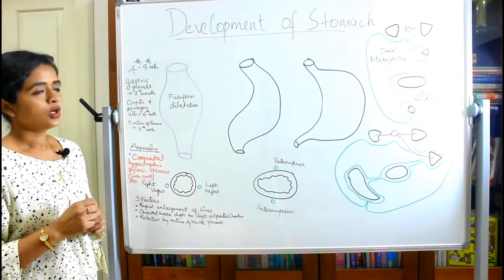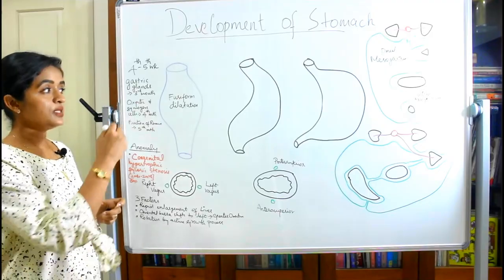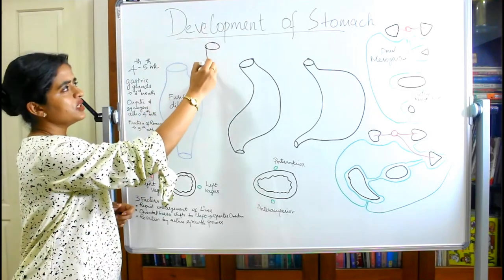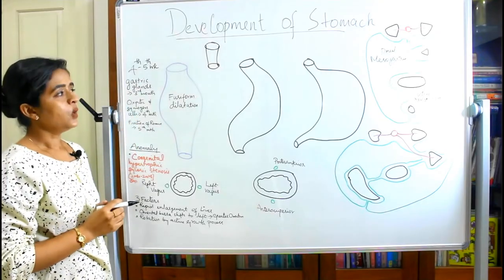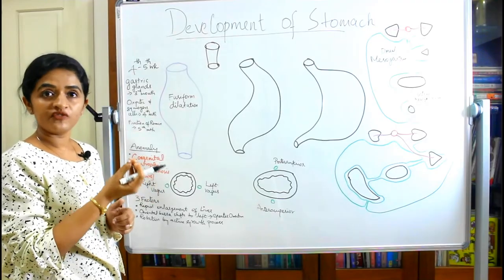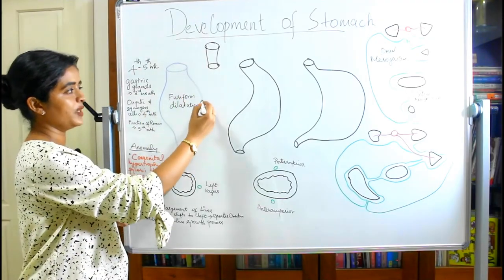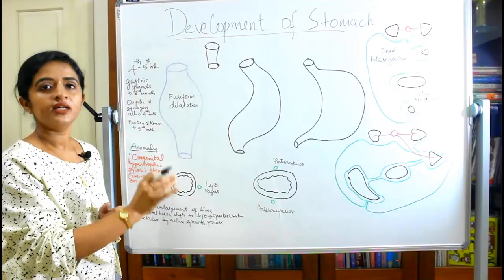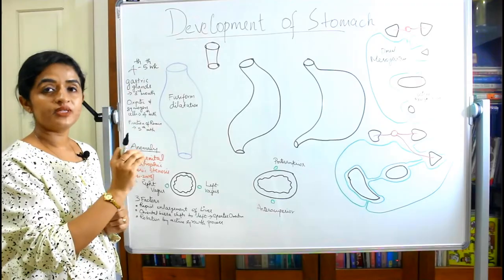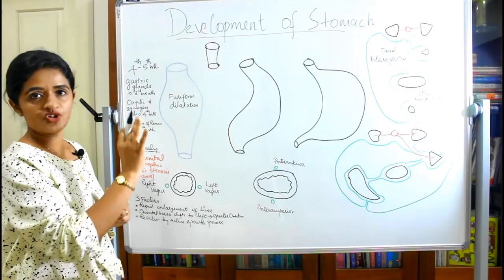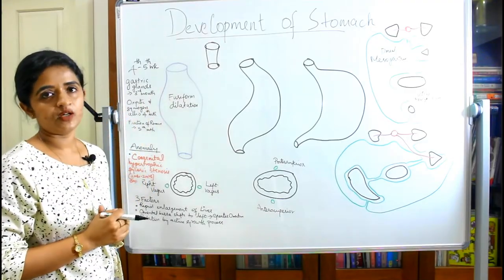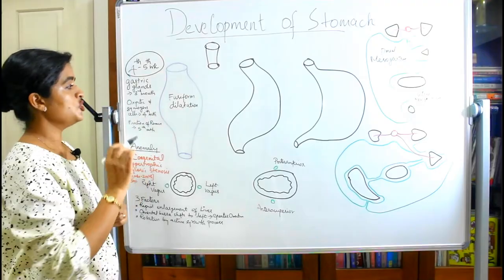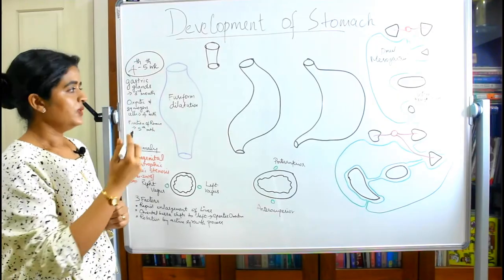The stomach is developed from the foregut — specifically the distal portion of the foregut. In the beginning, the entire gut is just in the form of a longitudinal tube. Towards the lower portion of the foregut, there is a fusiform dilatation — this is going to become our stomach. This usually happens between the fourth and fifth week of development.